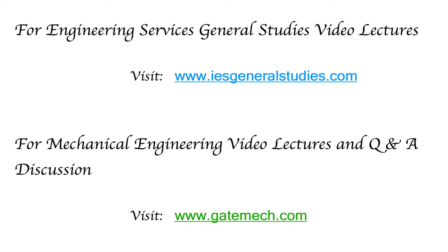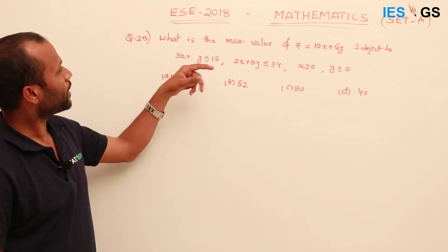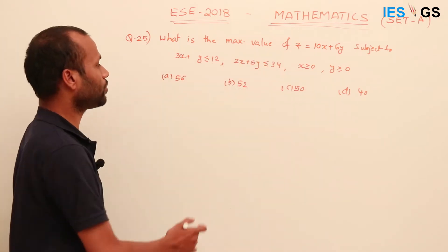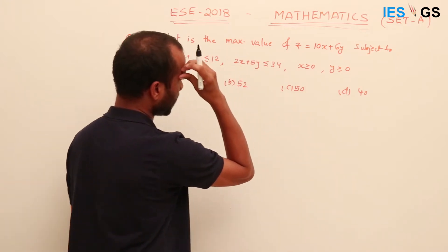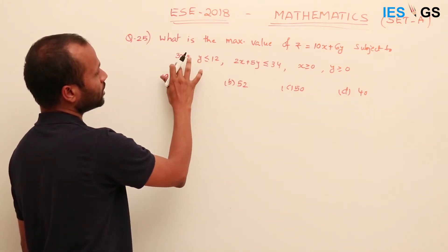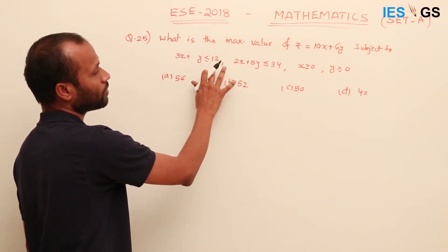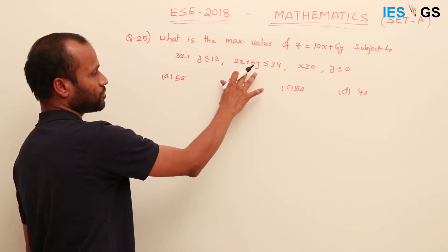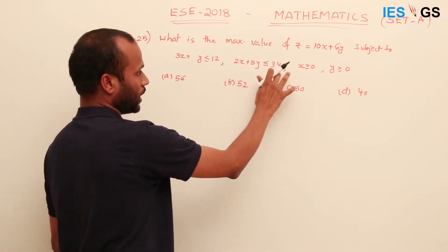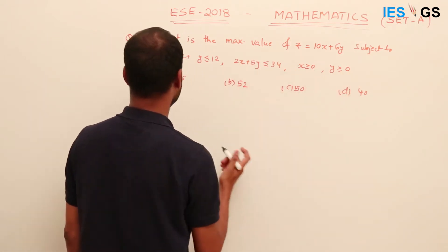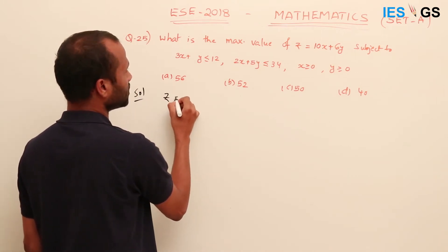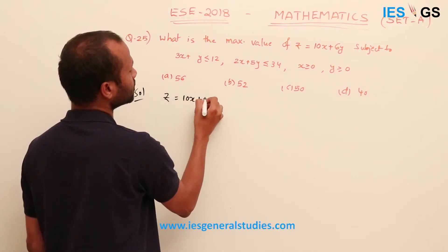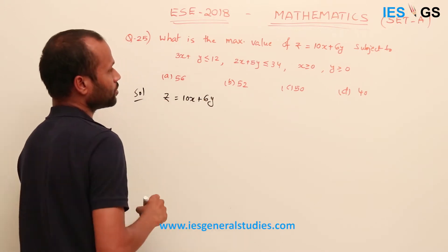Question number 25: what is the maximum value of z? Here z = 10x + 6y has to be maximized subject to the constraints: 3x + y ≤ 12, 2x + 5y ≤ 34, x ≥ 0, y ≥ 0.